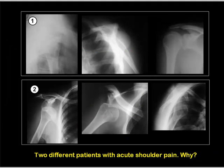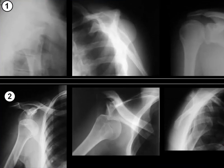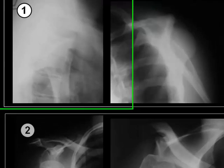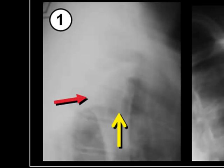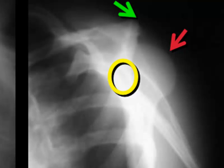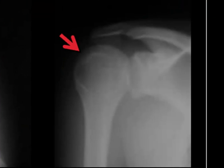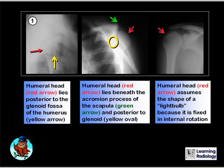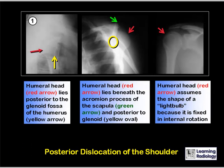Two individuals, both with acute shoulder pain. In patient one, the humeral head (red arrow) lies posterior to the glenoid fossa (yellow arrow). On the Y view, the humeral head lies beneath the acromion process (green arrow) and posterior to the glenoid. On the frontal view, the humeral head has the shape of a light bulb because it's fixed in internal rotation. These findings are characteristic of a posterior dislocation of the shoulder.